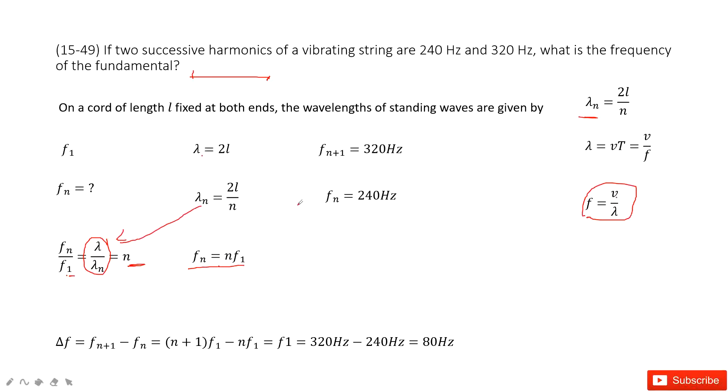Now things become easy. As we can see, what is given? It gave two successive frequencies, fn and fn plus 1. And then we know that. So we can see the difference between fn plus 1 and fn. The difference of the frequency, fn plus 1 minus fn, this is just the fundamental frequency f1. 80 Hz. Thank you.